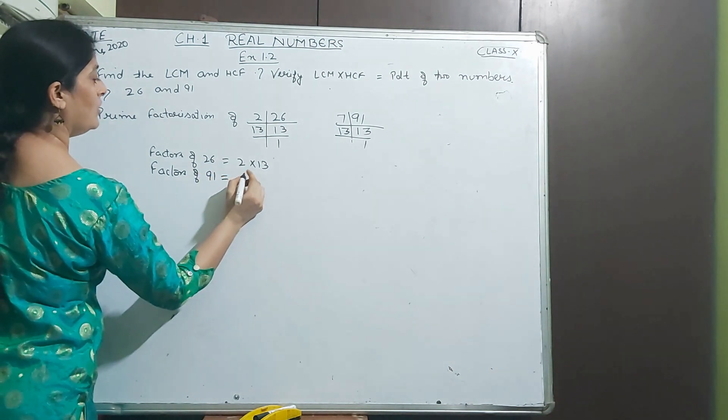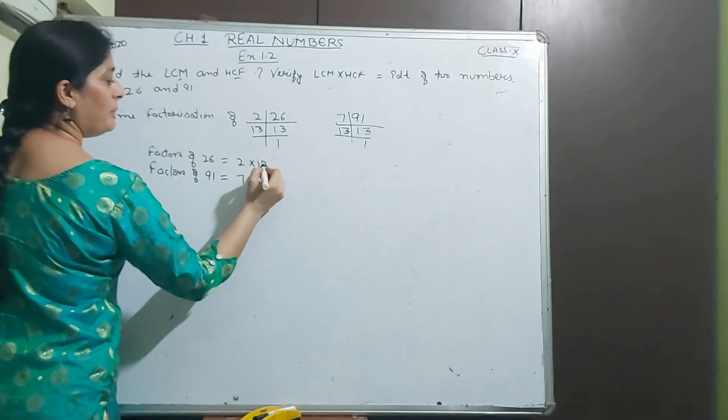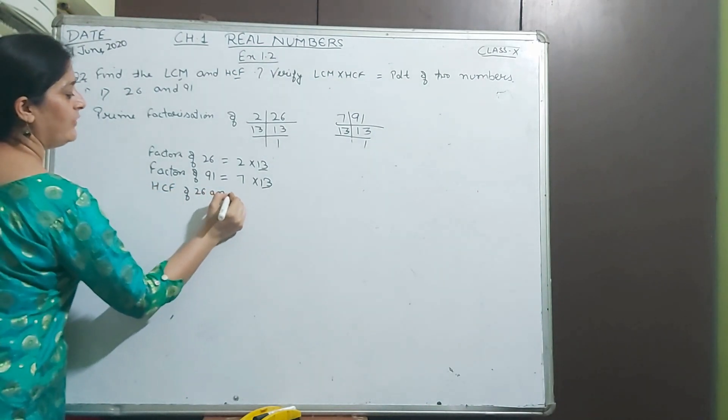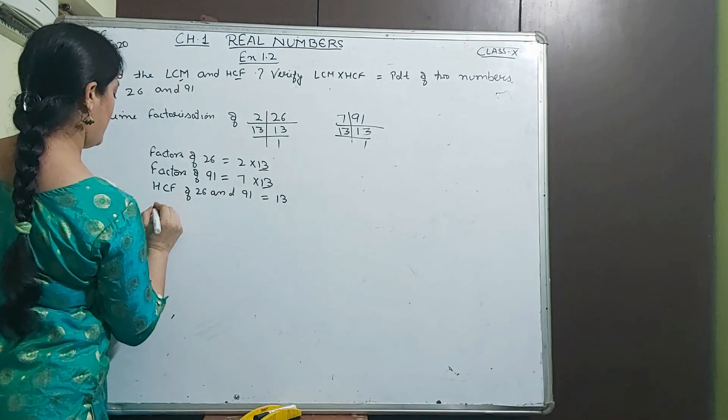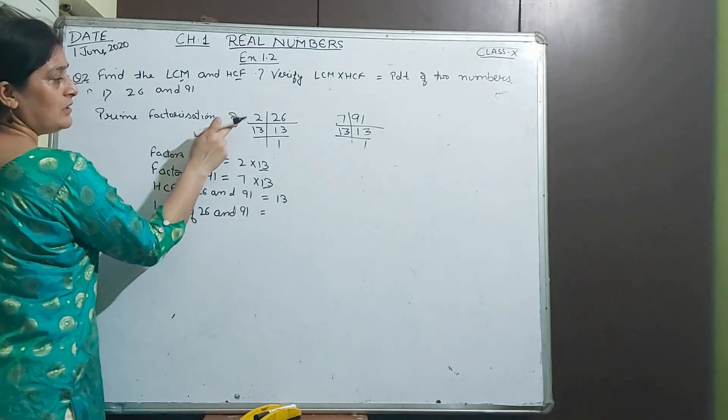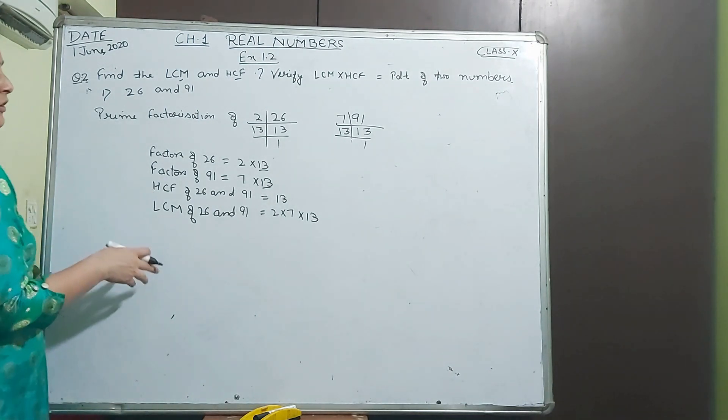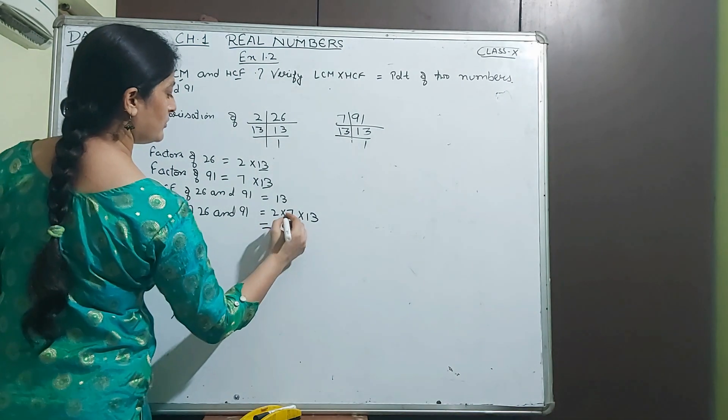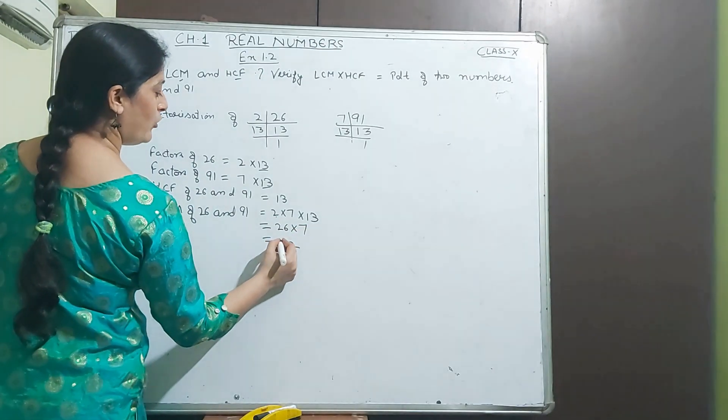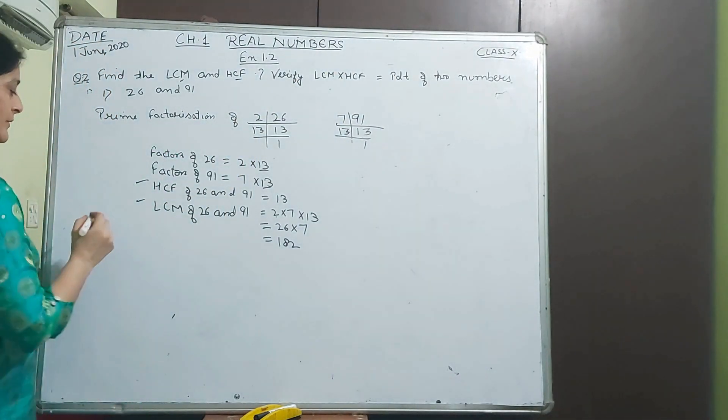Now 91. 91 is odd, not a factor of 2. We go with 3. 3 times 3 is 9, not a multiple of 3. 91 is a factor of 7. 7 times 1 is 7, carry 2, 7 times 3 is 21. Again 13 comes. 13 is a factor of 13. Factors of 91 are 7 into 13.